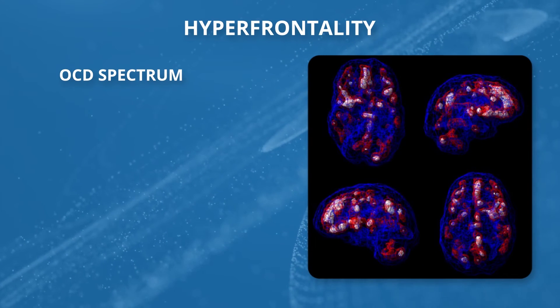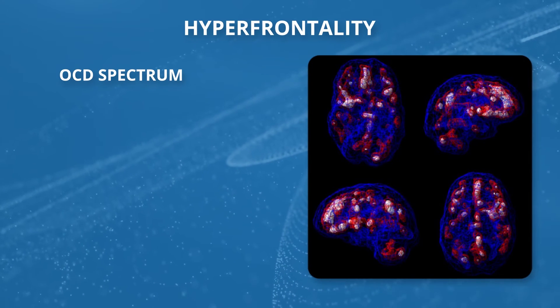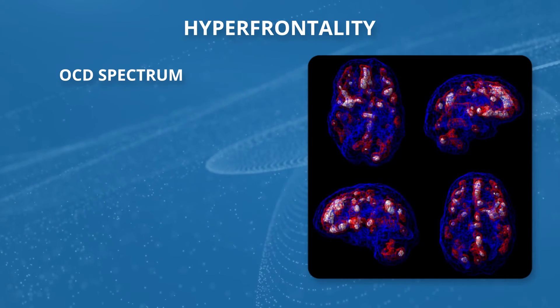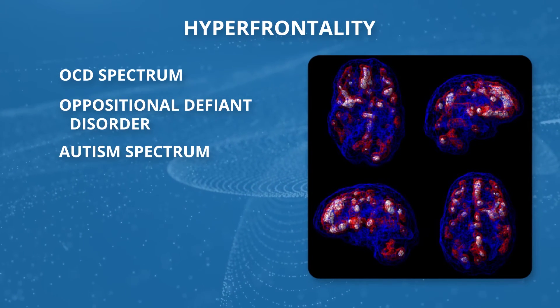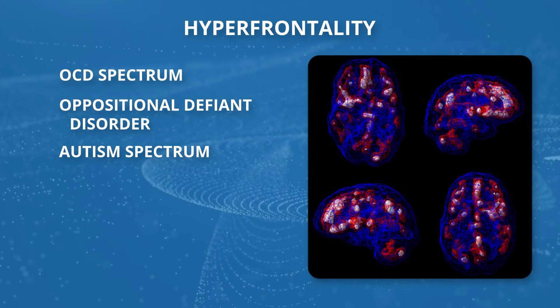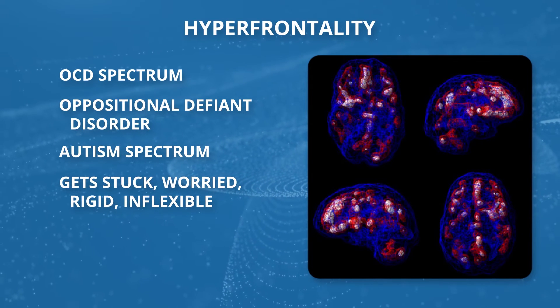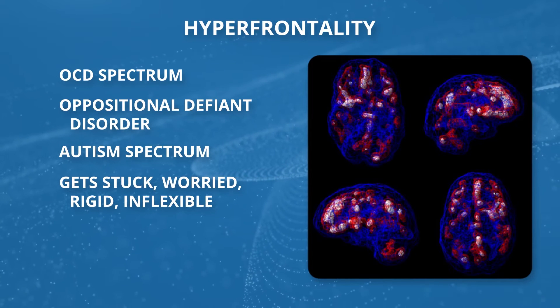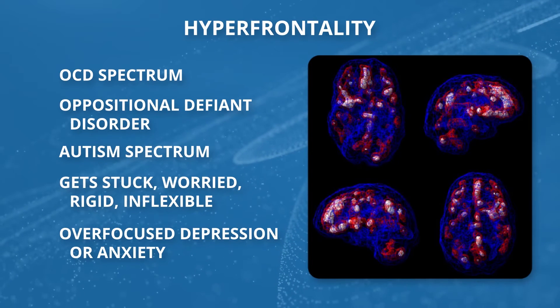There's another pattern called hyperfrontality, which means your frontal lobes are working too hard. It's classically seen in the research literature with OCD — obsessive compulsive disorder — and the OCD spectrum, including oppositional defiant disorder, autism, and trichotillomania. We also see it in people who get stuck, who are worried, rigid, and inflexible. If things don't go their way they get upset, and in over-focused kinds of depression and anxiety where they just can't stop thinking about the bad thoughts.